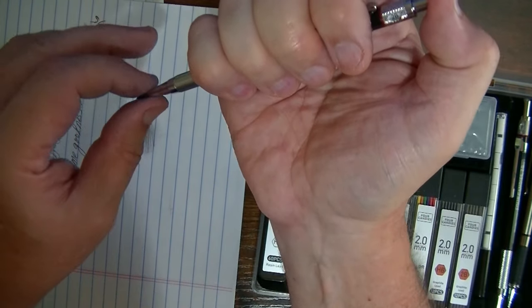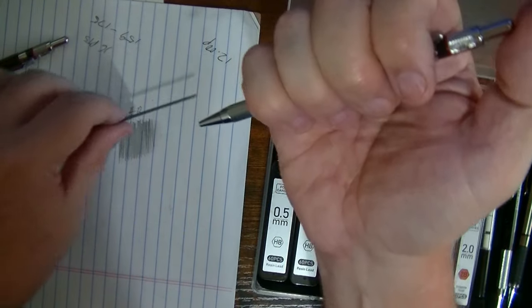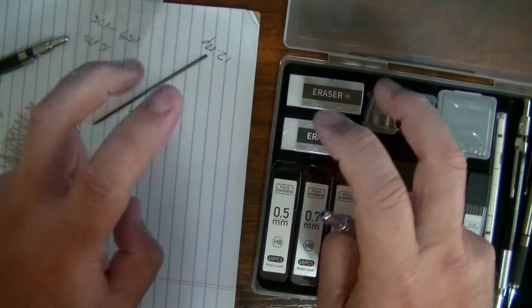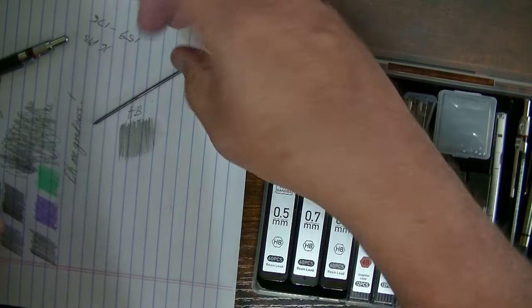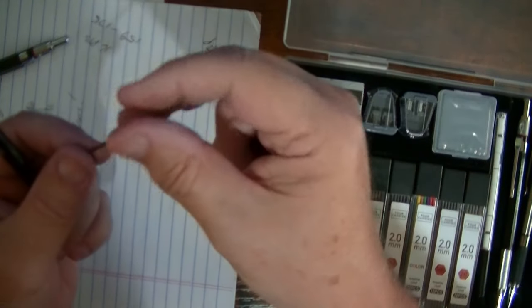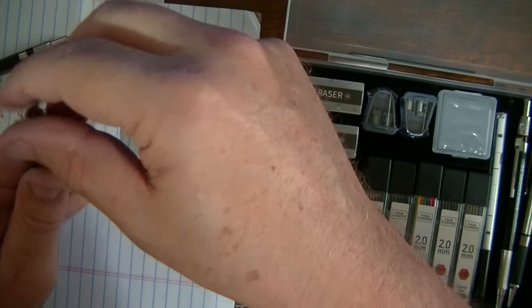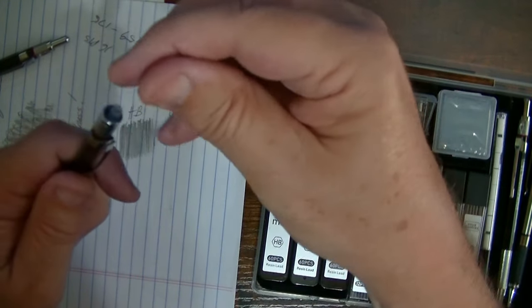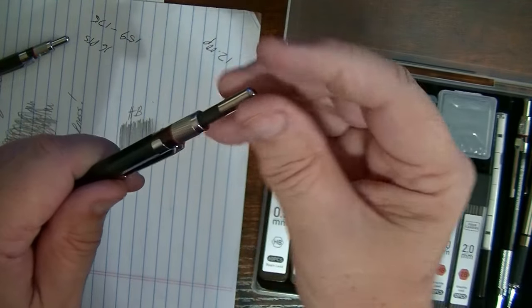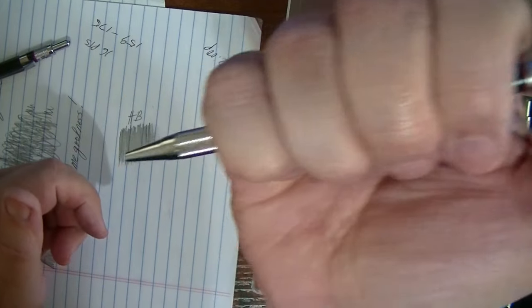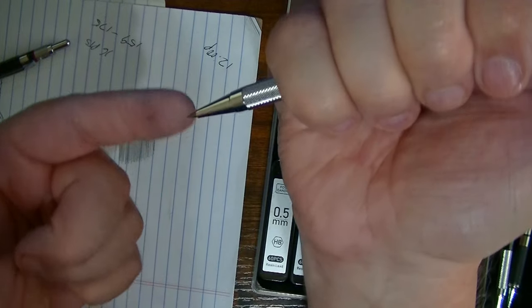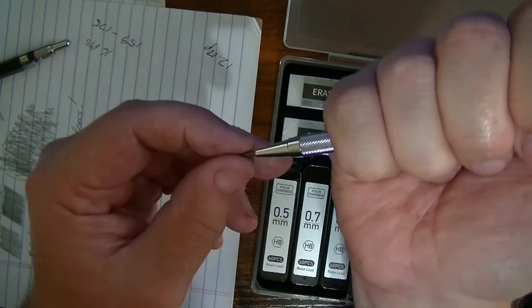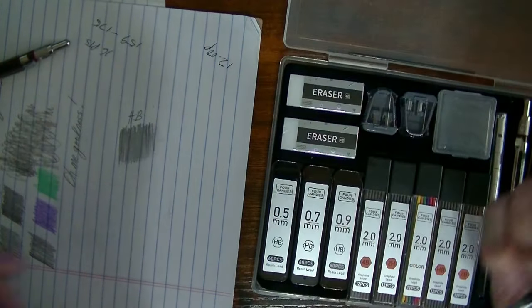Or if you want to do it like the way you're supposed to, I guess officially do it, you take the back part off. You got that hole there. And you can stick the lead down in there. And then you can push this cap thing back on. And then do this a few times and there it comes. So you decide which way you like to do it. I like to just put it in from the bottom here.